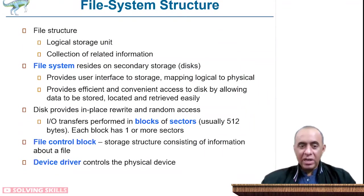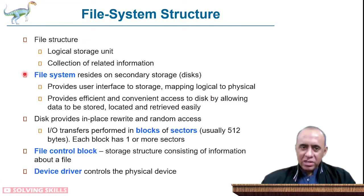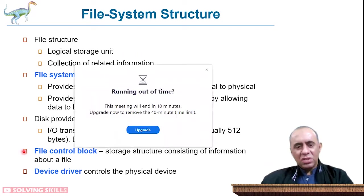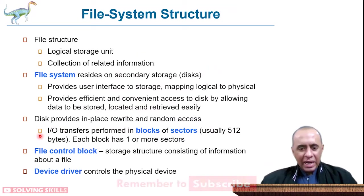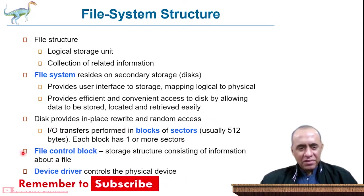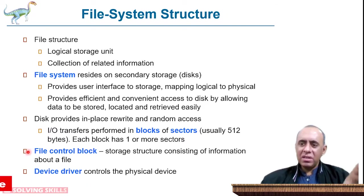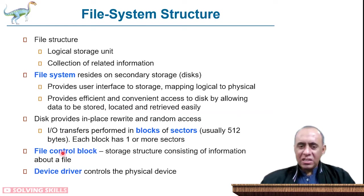The file system resides on the disk. A file structure is a logical collection of related information. The disk provides in-place rewrite and random access abilities, and I/O transfers are performed in terms of blocks. We are concerned with blocks, not individual sectors. There is a file control block (FCB), which — just like the process control block — is an information header for that particular file, stored inside the directory structure. Every file has a file control block, just as every process has a process control block.